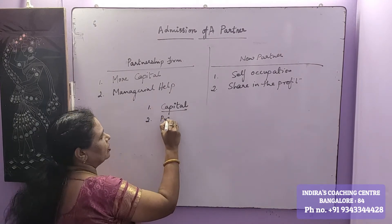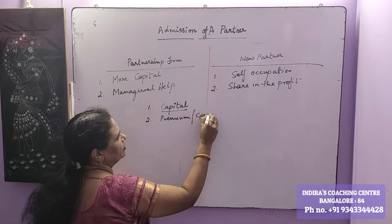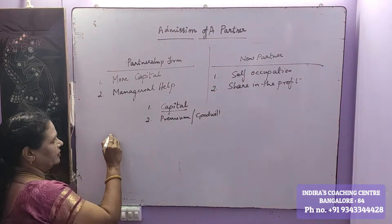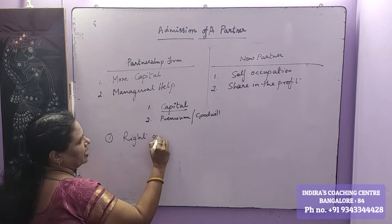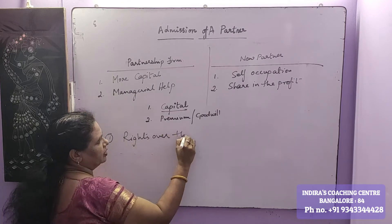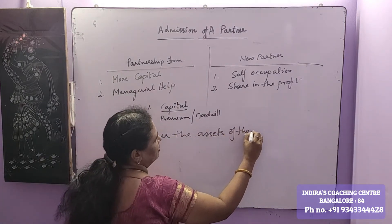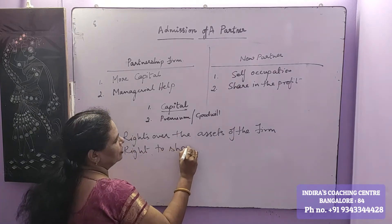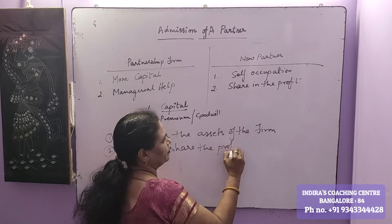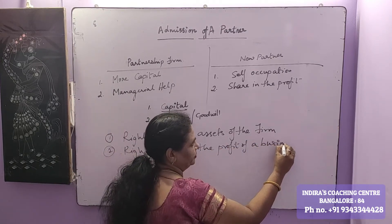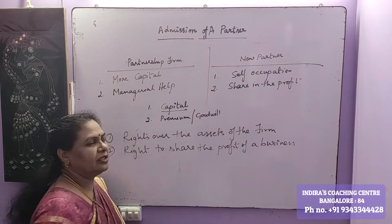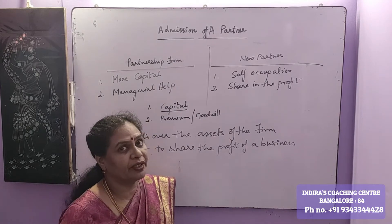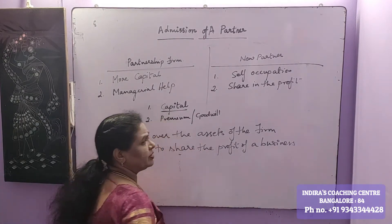Secondly, he has to bring an extra amount which is called premium or goodwill. When a new person enters into the business, he acquires two rights: one, rights over the assets of the firm, and second, the right to share the profits of the business. To get a right over the assets of the firm he has to bring capital, because the other partners have invested capital before, and now he is also supposed to bring capital.